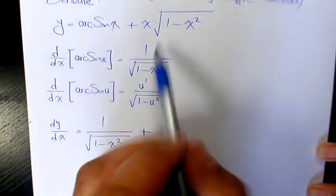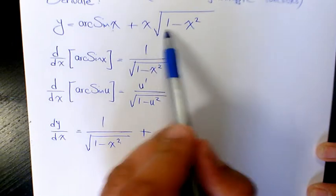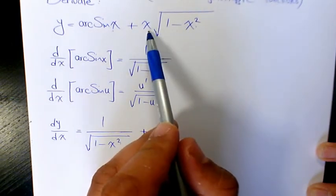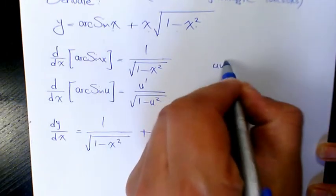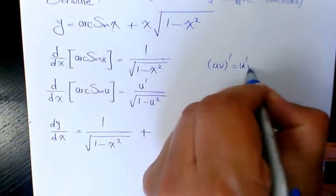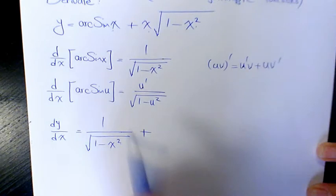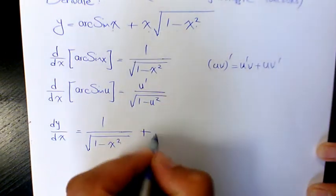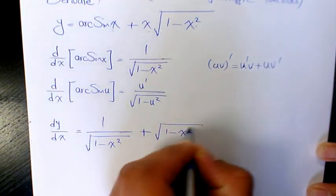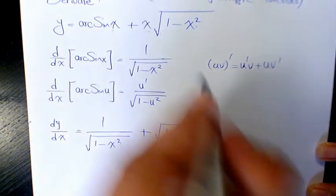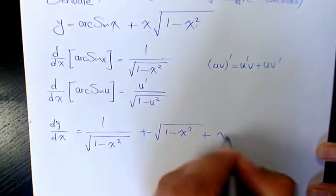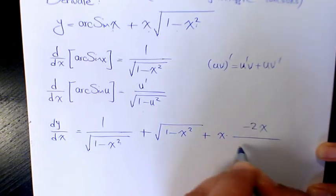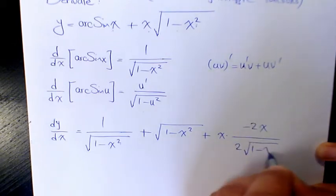Plus, here we have x times square root of 1 minus x squared. We need to use the product rule, which is (uv)' = u'v + uv'. Derivative of x is 1, times square root of 1 minus x squared, plus x times the derivative of that, which is negative 2x over 2 root of 1 minus x squared.